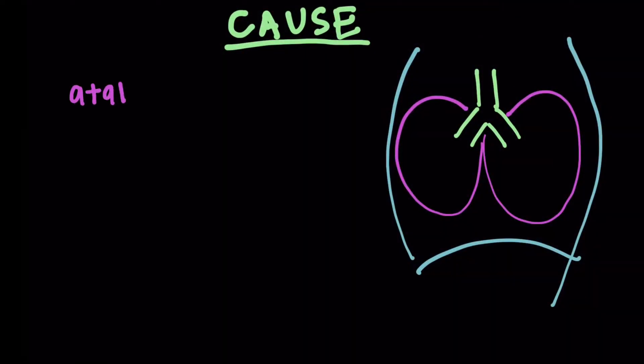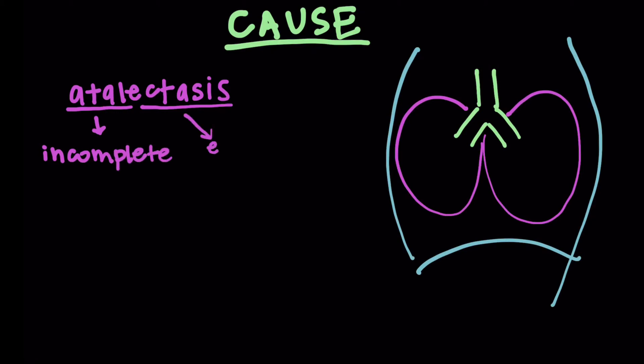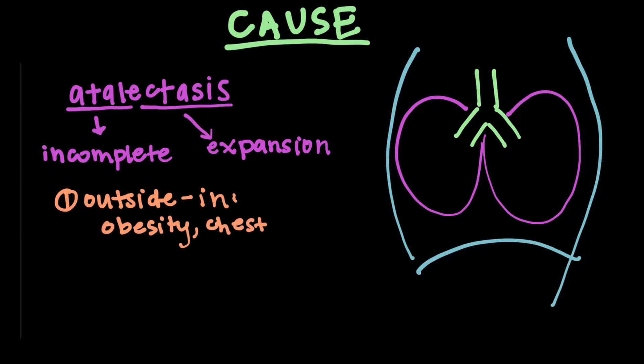So now let's move on to the cause of atelectasis. So what atelectasis really means is incomplete expansion, essentially. So an incomplete expansion of the lung is what you're going to be thinking about. So again, I like to think about this outside in. Outside in, so obesity, because you can't move your belly out of the way. Chest wall disease, like scoliosis. And a pleural effusion, so fluid in that pleural space.